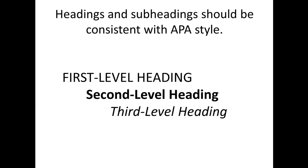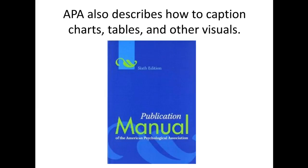Headings and subheadings should be consistent with APA style — you don't just do headings however you would like. APA tells us how to do headings: a first level heading, a second, and a third, each with different formatting. First level headings are upper case. Second level headings are upper and lower case and bold face. Third level headings are indented and italicized. This is all laid out for you in APA style, so consult your textbook or the APA manual to learn how to do headings if you have a large enough paper or electronic format that requires them. APA also describes how to caption charts, tables, and other visuals — in a formal academic paper, there is a definite way to do it.